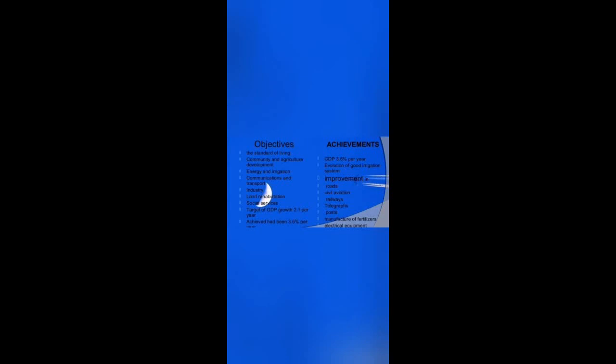Annual Plan / Rolling Plan (1978–80): the concept of rolling plan is related to Gunnar Myrdal. The Sixth Five-Year Plan was started in 1978 by the Janata Government under the head of Morarji Desai. This plan was rejected by the Indian National Congress in 1980.